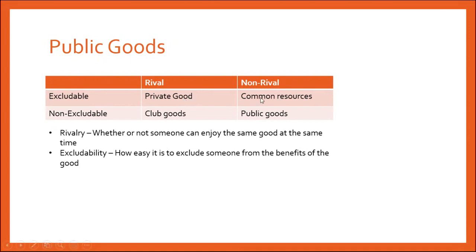Something that is excludable but non-rival is called a common resource. This would be something like a pond or a park. The park is excludable — you can put up a gate and prevent people from coming in — but it's pretty hard to prevent somebody from enjoying the benefits of it once they're in. Classrooms and education are similar to this.